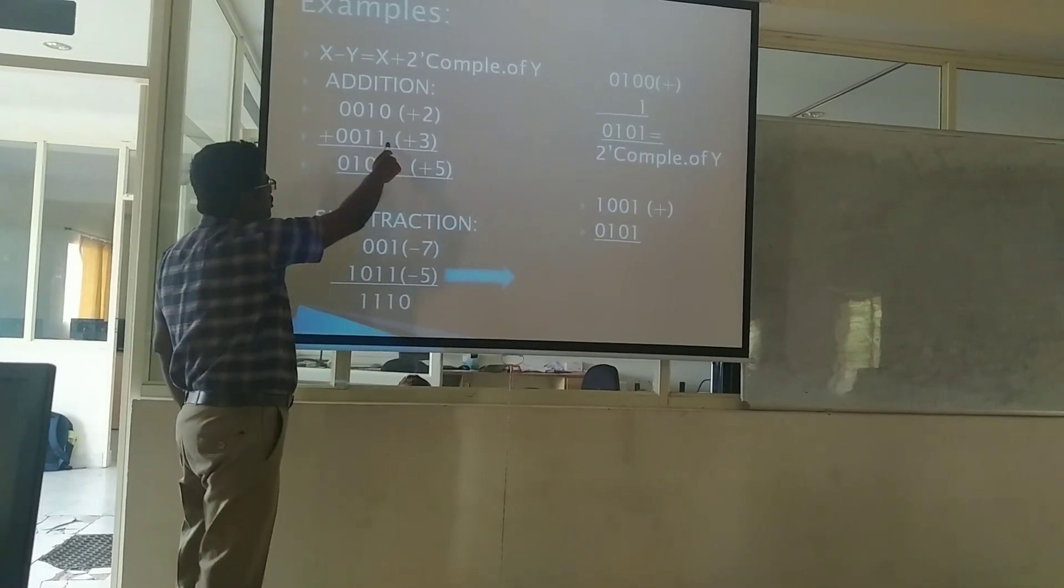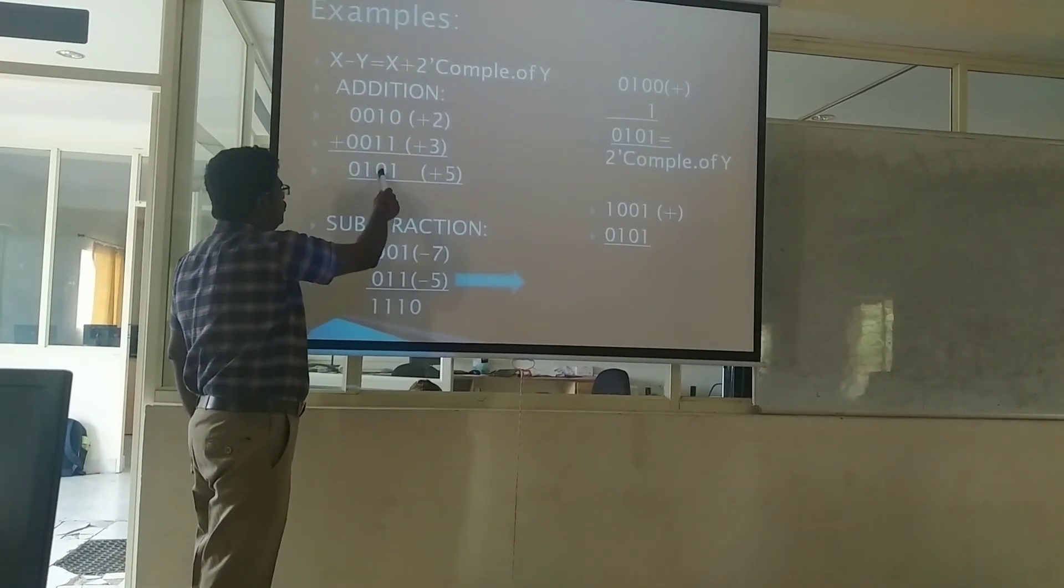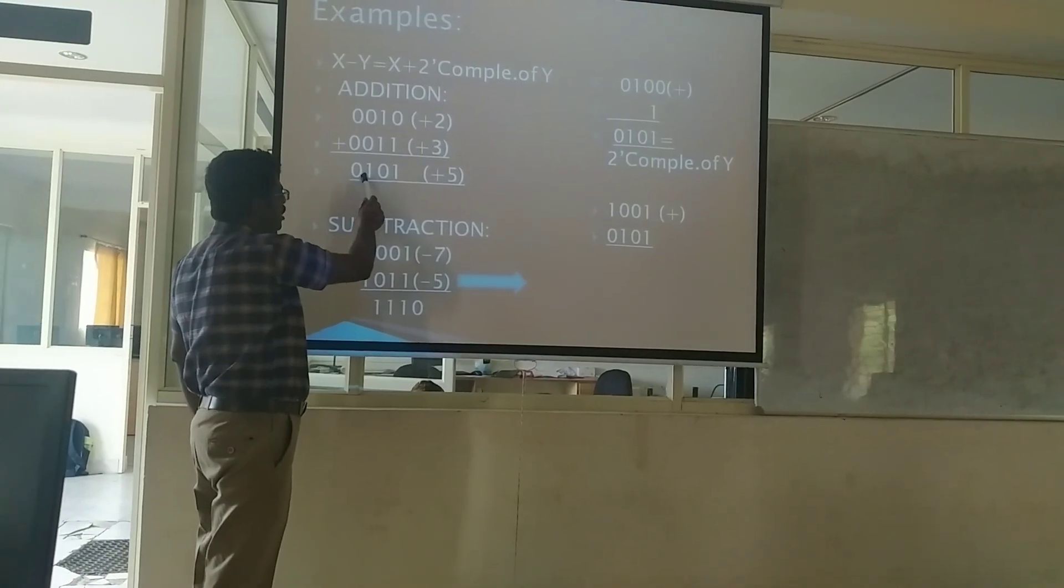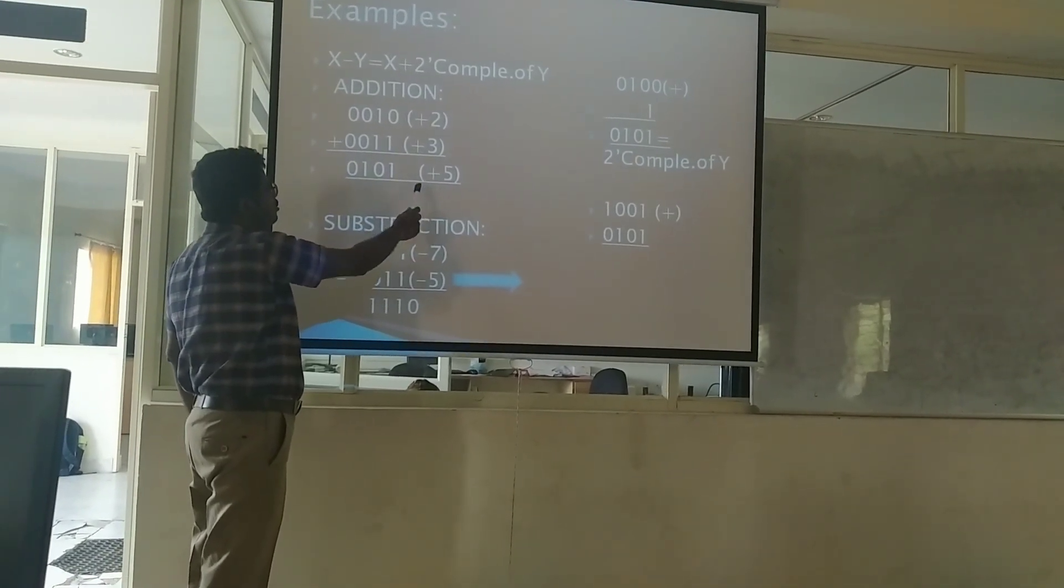So 0010, 0011, just adding 0 plus 1 is 1, 1 and 1 is 0. Then again 1 will carry and substitute here and 0. So now I have added these two numbers. But when I put subtraction, we have to look over and apply the 2's complement format here.